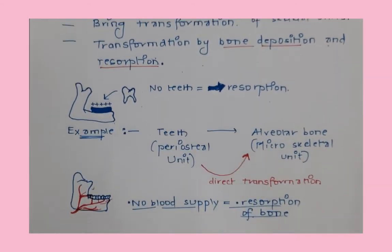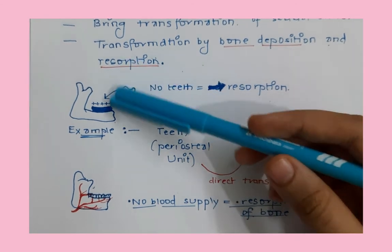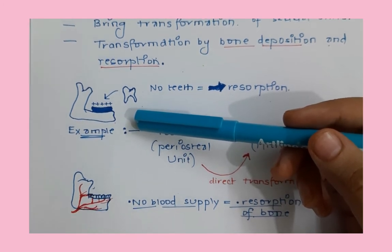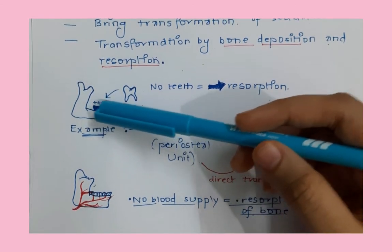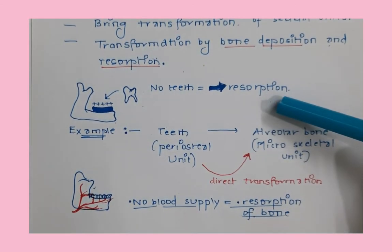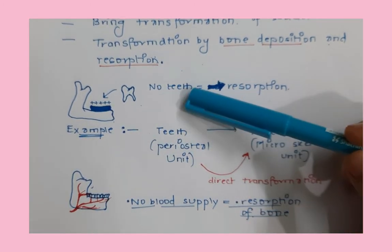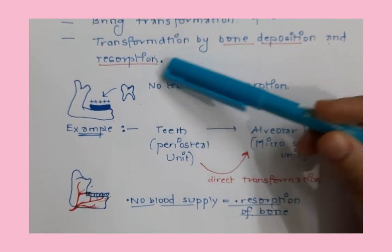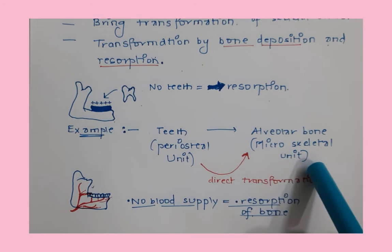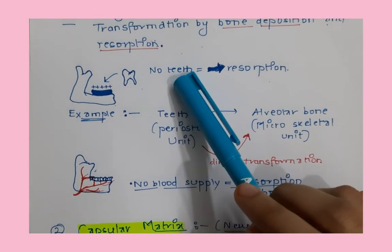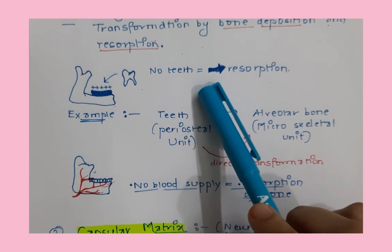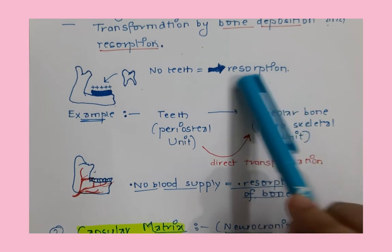Let's see how. Looking at the mandible — when teeth are present, alveolar bone deposition takes place as the teeth erupt. When no teeth are present, resorption occurs. Teeth are a component of the periosteal matrix, and the alveolar bone is a microskeletal unit. This is how the microskeletal unit is influenced by a periosteal unit. When no teeth are present, resorption of the alveolar ridges occurs — which is why we periodically reline complete dentures due to ongoing resorption.